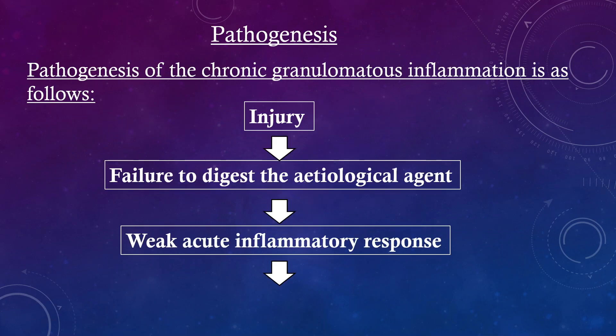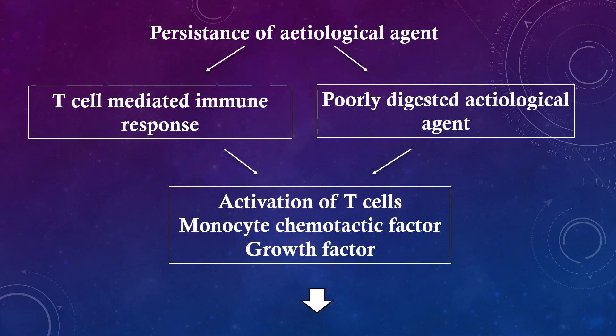Pathogenesis. The pathogenesis of chronic granulomatous inflammation is as follows. Injury is followed by failure to digest the etiological agent, followed by a weak acute inflammatory response, followed by persistence of the etiological agent leading to T cell-mediated immune response or poorly digested etiological agent.